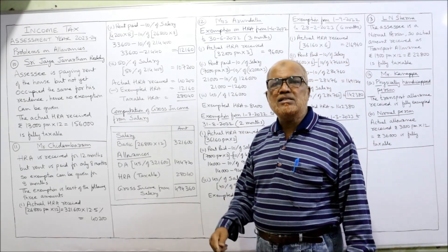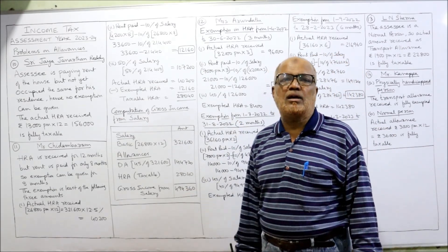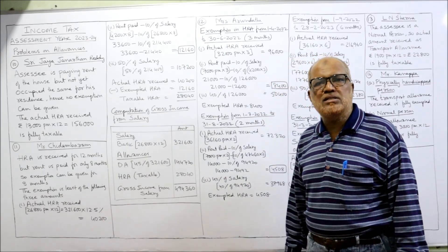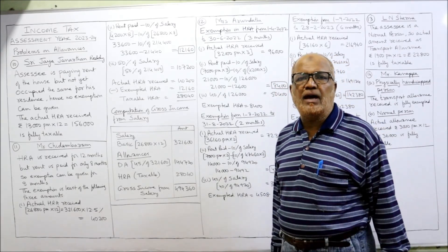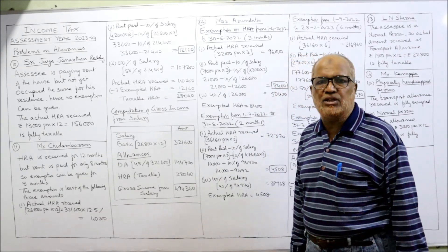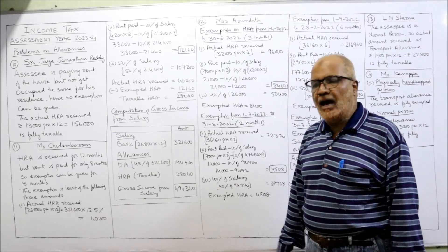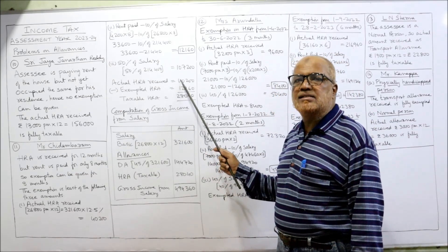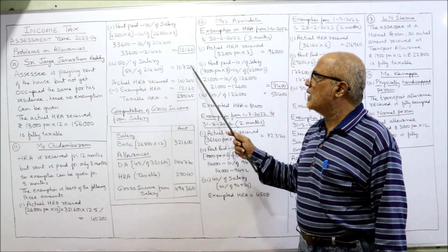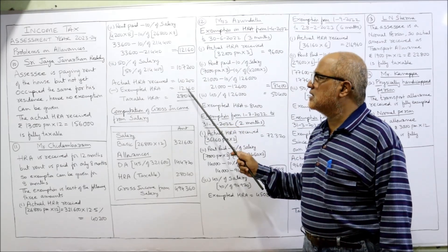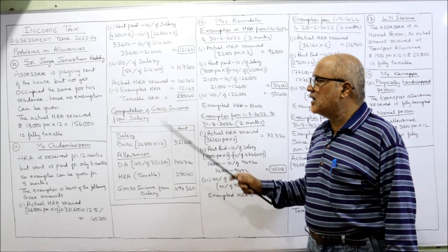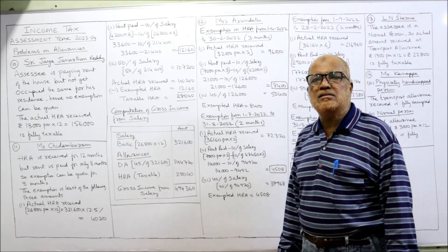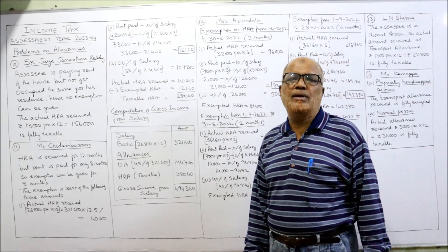It is asking what is the taxable HRA. So from actual HRA received, deduct the exempted HRA. Actual HRA received ₹40,200 minus exempted HRA ₹12,160 gives ₹28,040 as taxable HRA.